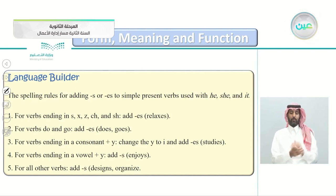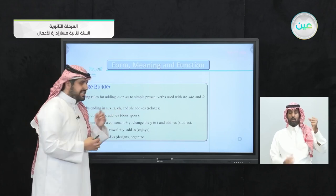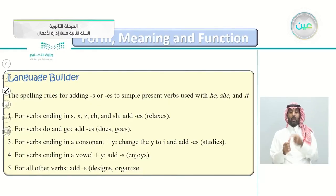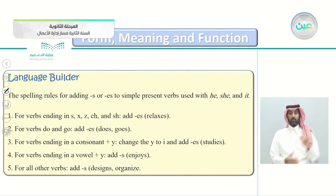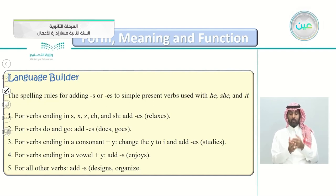Rule two: for the verbs 'do' and 'go,' we add 'es' — giving us 'does' and 'goes.' Rule three: for verbs ending in a consonant plus 'y,' change the 'y' to 'i' and add 'es' — for example, 'study' becomes 'studies.' Rule four: for verbs ending in a vowel plus 'y,' just add 's' — for example, 'enjoy' becomes 'enjoys,' 'play' becomes 'plays.' Rule five: for all other verbs, just add 's' — like 'designs' or 'organizes.'